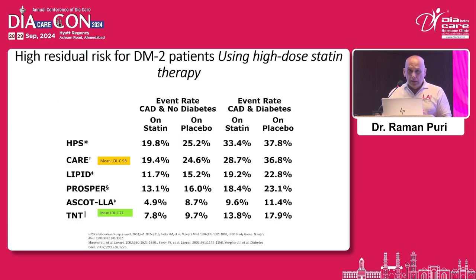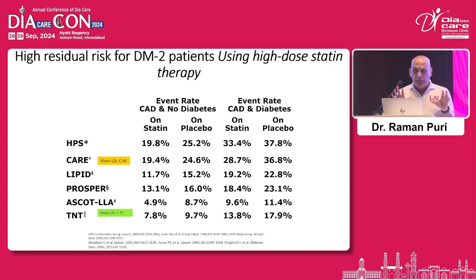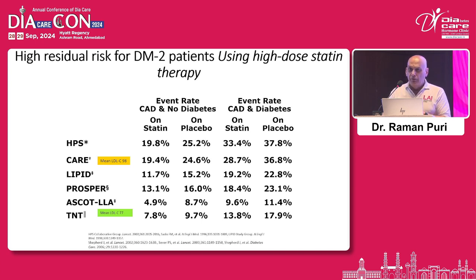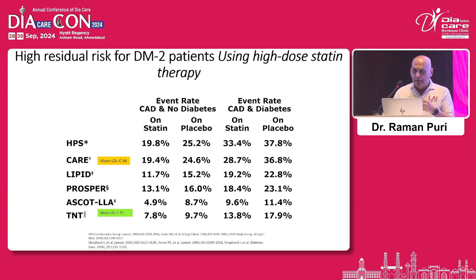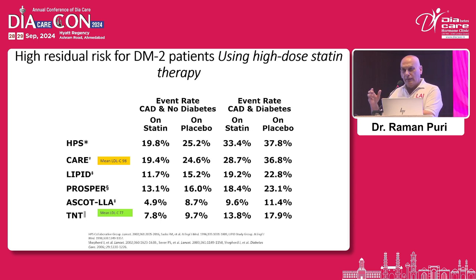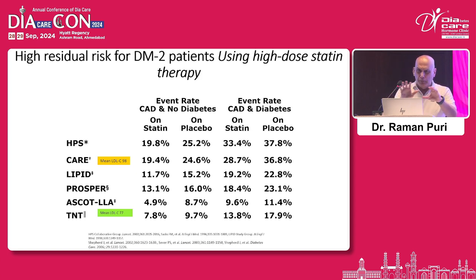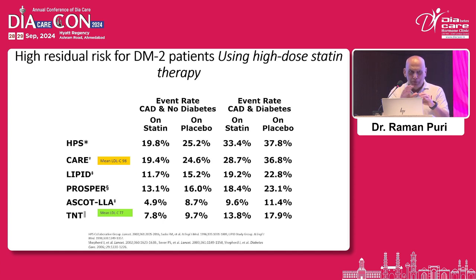Now the real story starts — when diabetes has an association with other diseases, it becomes a very serious issue. Diabetes is like India and coronary artery disease is like Pakistan. When they come together, to make it easier to understand, you need to treat them very differently.